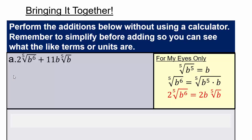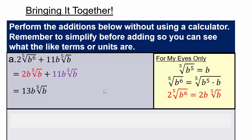So 2 times the fifth root of b to the sixth simplifies as 2b times the fifth root of b, because the b to the fifth pulled out and became a b. Our problem then changes to 2b fifth root of b plus 11b fifth root of b. Now we have a common unit, so 2 and 11 gives you 13b fifth root of b.